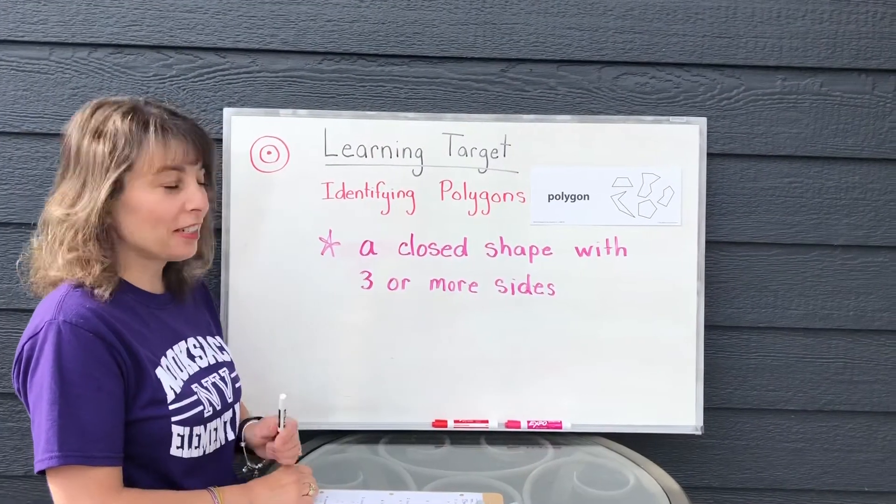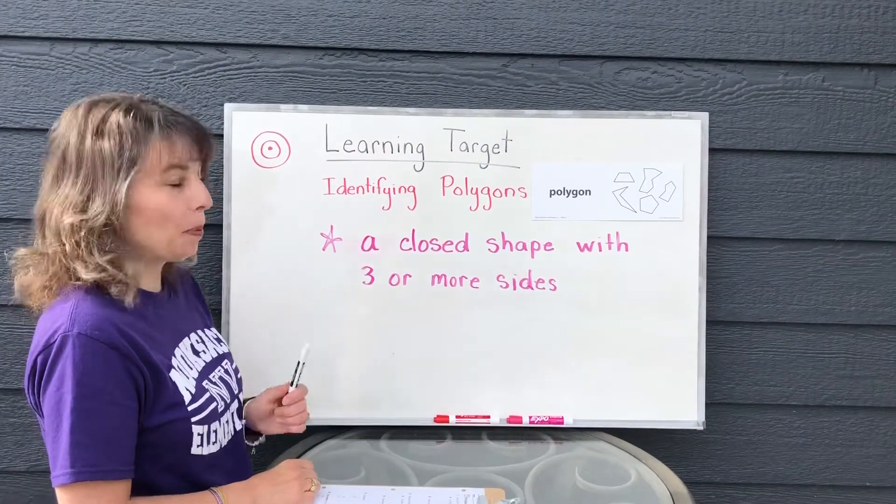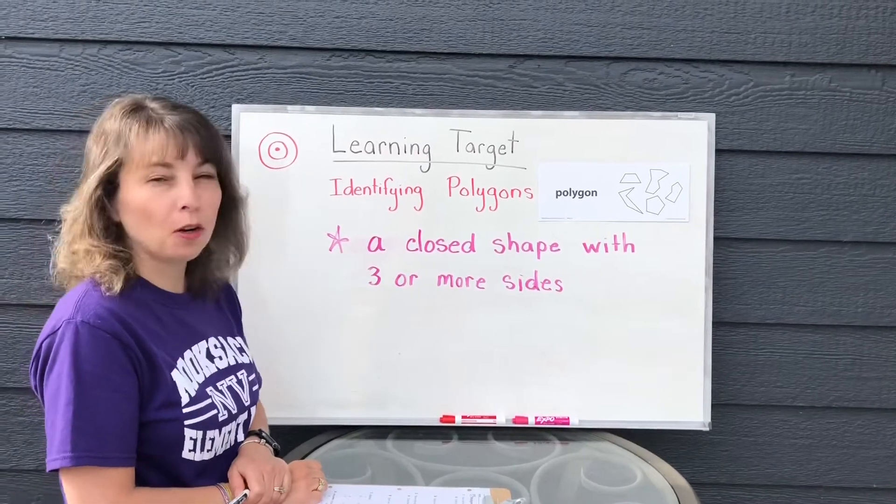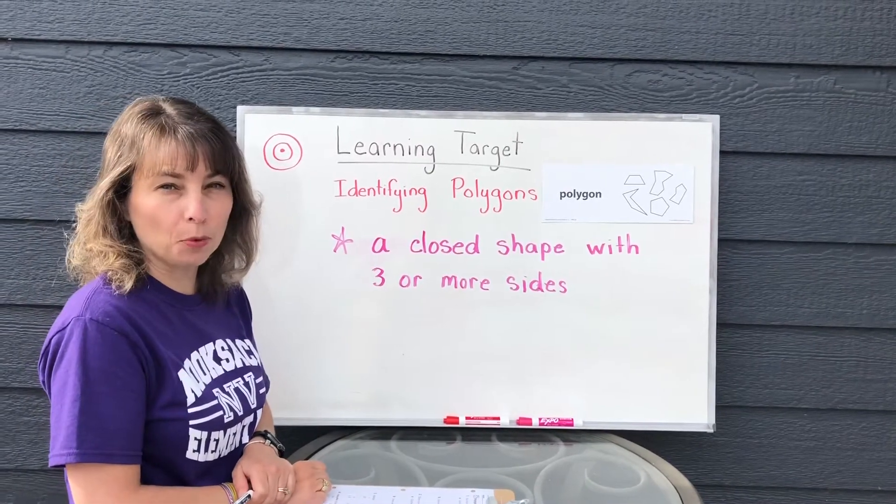So here's our definition of a polygon: a closed shape with three or more sides.